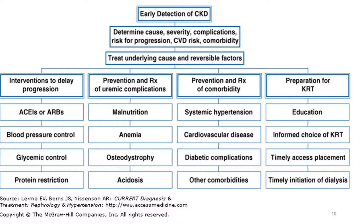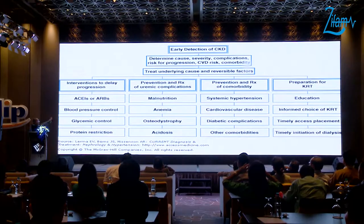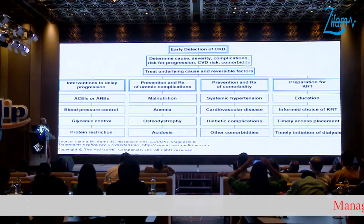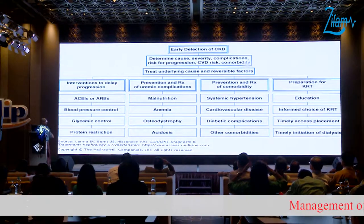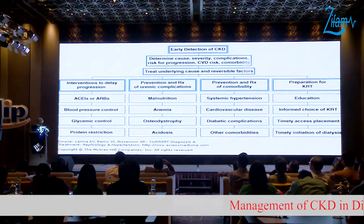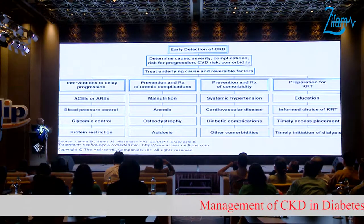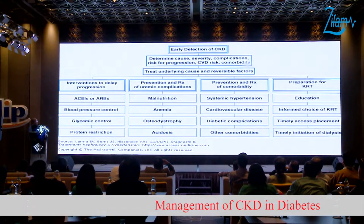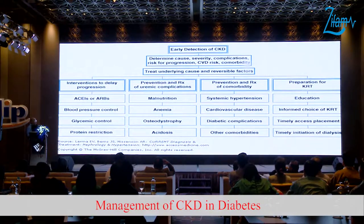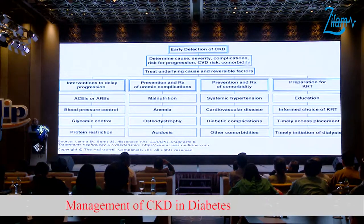Treat the underlying reversible cause and intervene to delay progression using ACR monitoring, blood pressure control, glycemic control, and protein restriction. Prevent and treat uremic complications including malnutrition, anemia, osteodystrophy, and acidosis. Treat comorbidities and prepare the patient for renal replacement therapy.